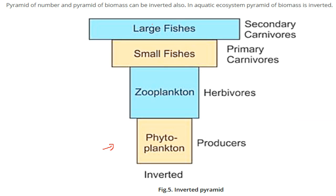In an aquatic ecosystem, we have large fishes, then small fishes, then herbivores, and then producers like phytoplankton in the water. So this is kind of inverted, as you can see.